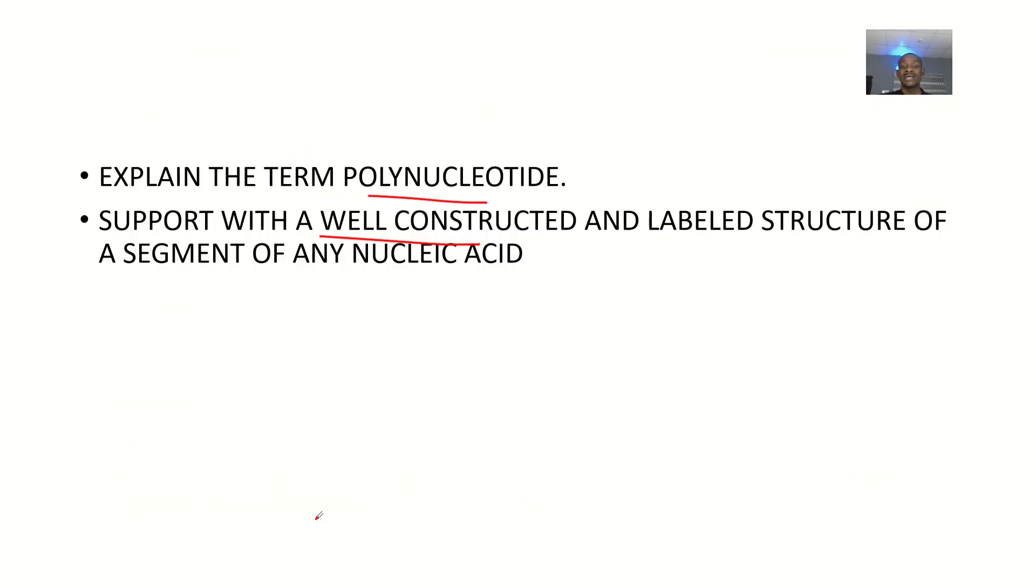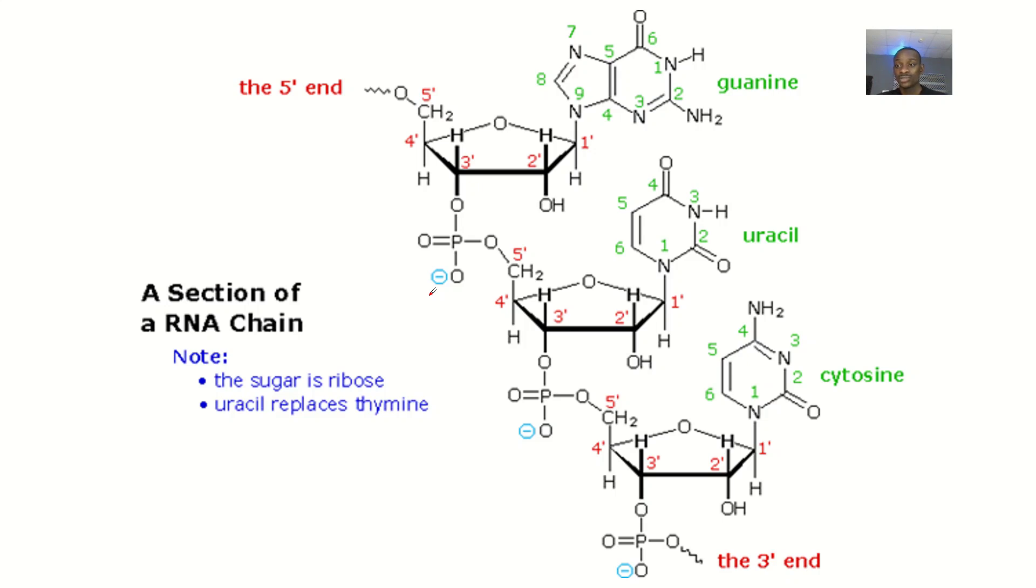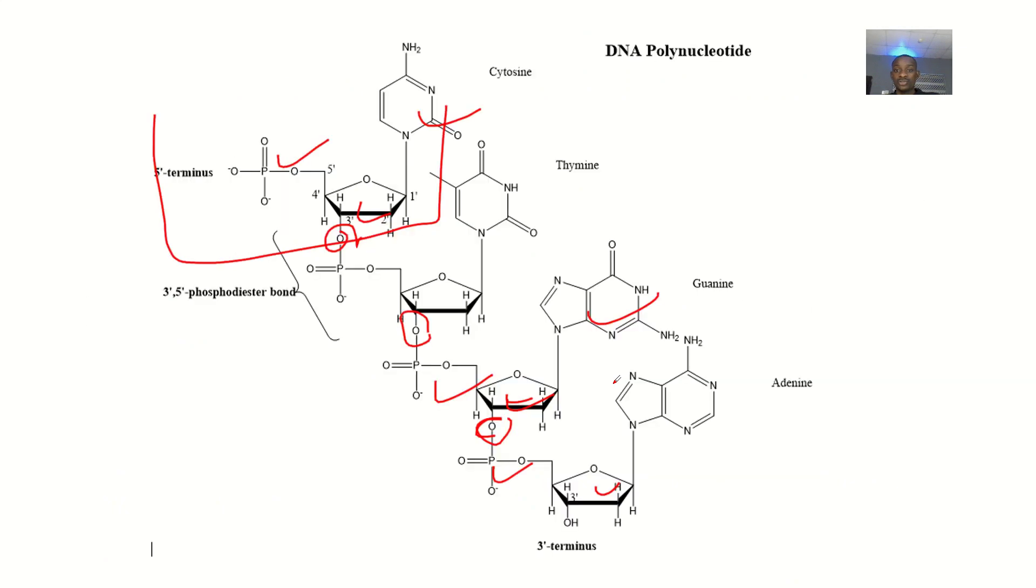So looking at the last part of this question is to draw a label of any nucleic acid. So nucleic acid is what? You could say RNA, you could say DNA. So for me, I'm picking RNA. So they're just trying to talk about an RNA is a polynucleotide. So they're now just saying that you should draw an RNA. So this is a drawing of an RNA. So note how the things are communicating. They are communicating at the level of the sugar and phosphate. Sugar and phosphate. Sugar and phosphate.